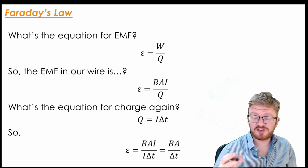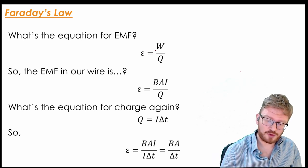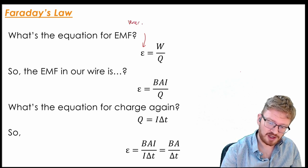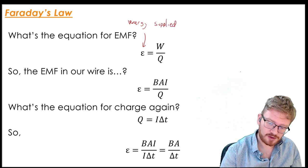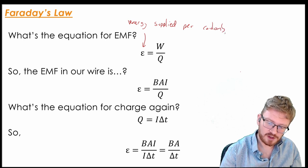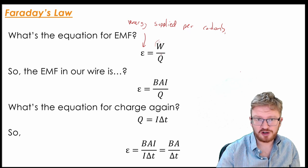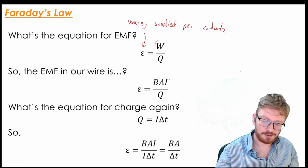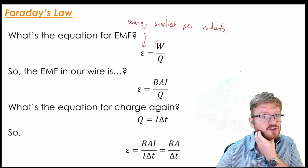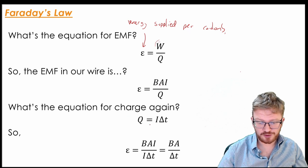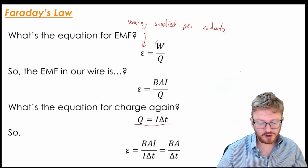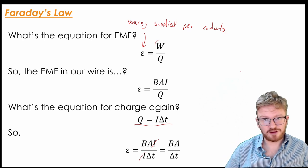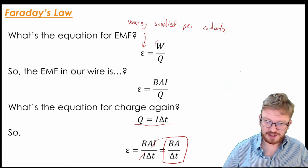Now if you think back to IGCSE actually, we know that voltage is work done per unit charge. So an EMF, remember an EMF is energy supplied per coulomb. So that's going to be work done on the charge divided by the total amount of charge. So if I substitute that back into our previous equation, we can say that the EMF will be BIA over Q because I already worked out what the work done was. I also know that the equation for charge is Q is I times T. So what I can say is if I substitute in for Q, I get BIA over I delta T. And then I can cancel out the I's and get this equation, BA over delta T.